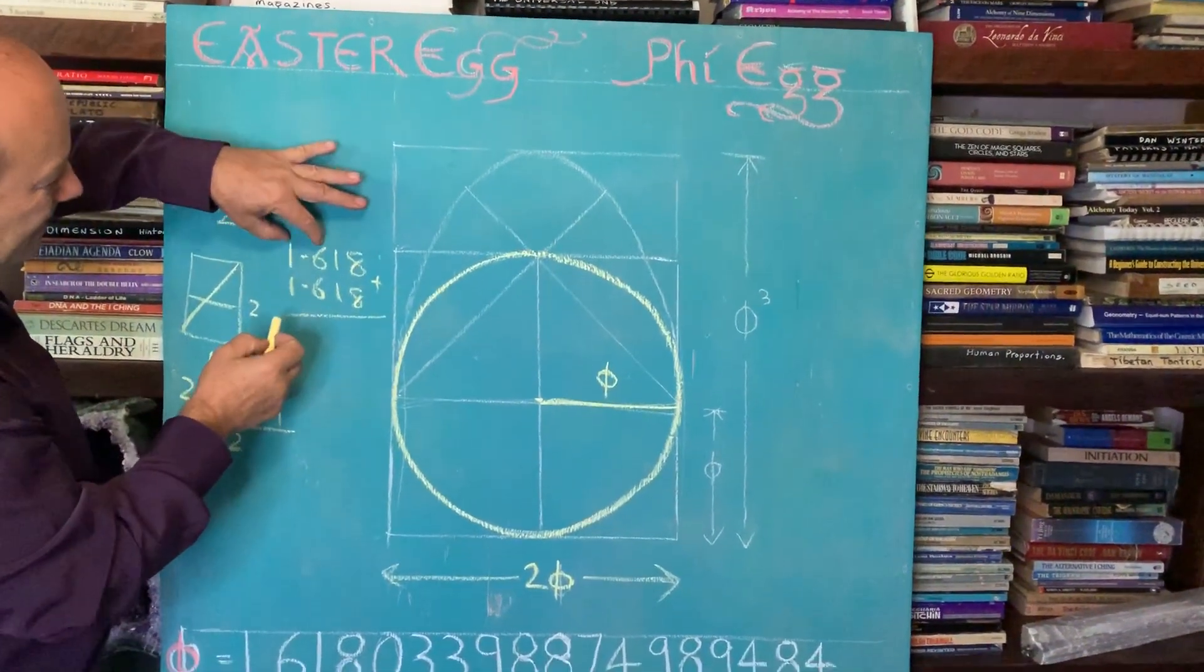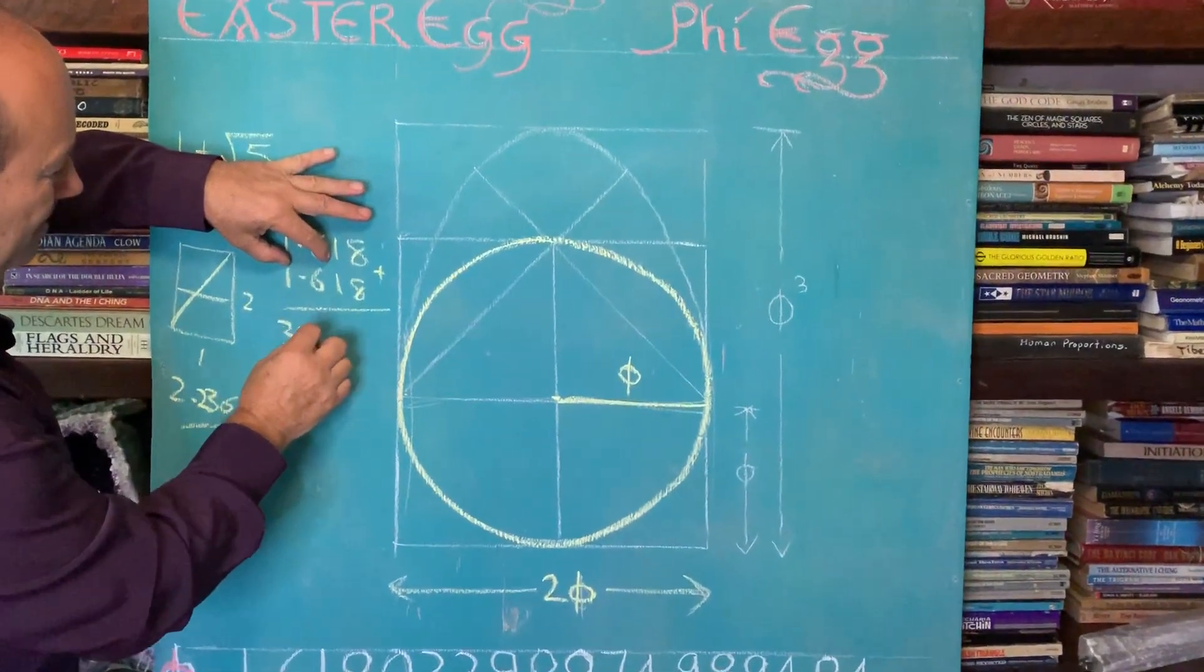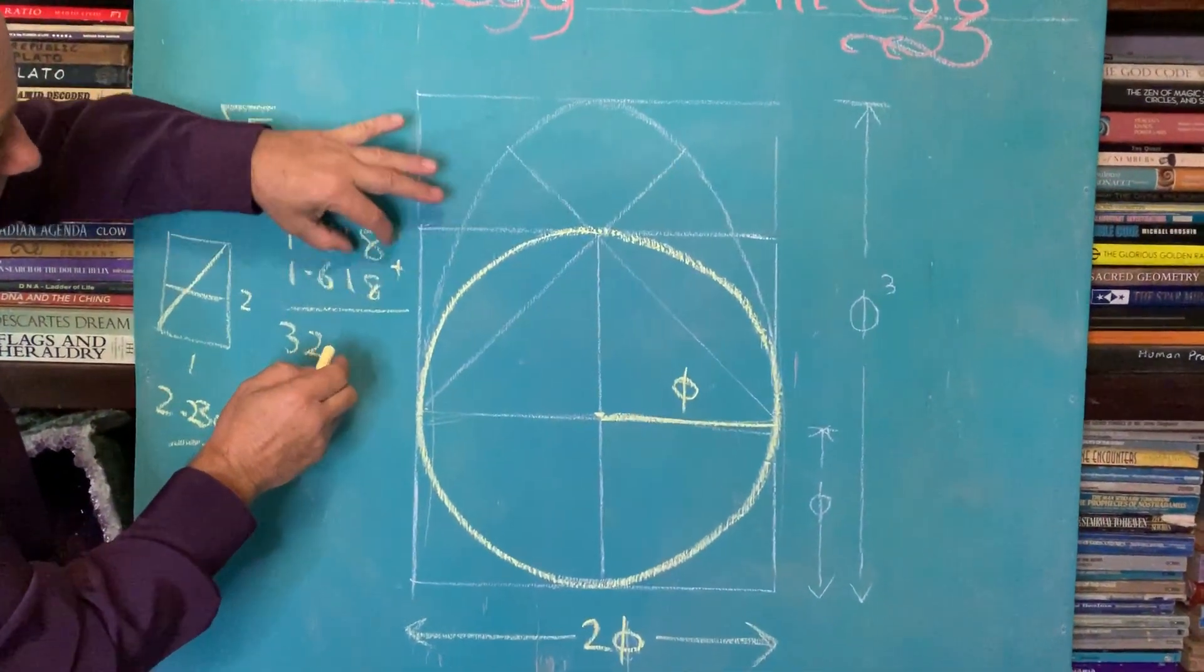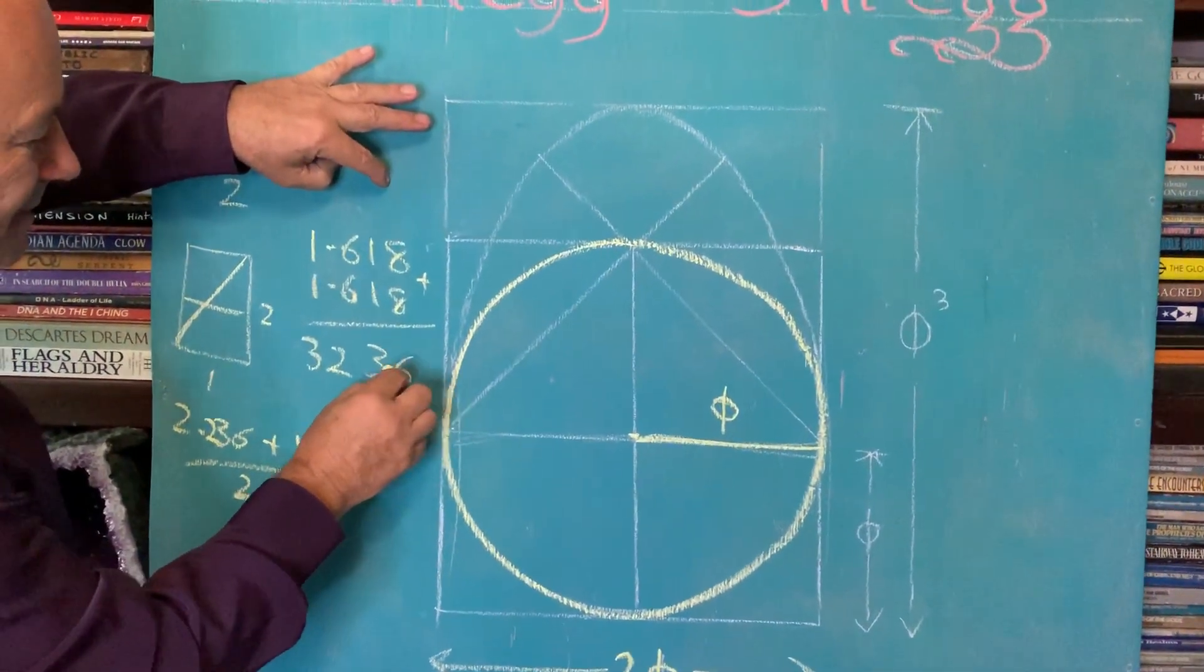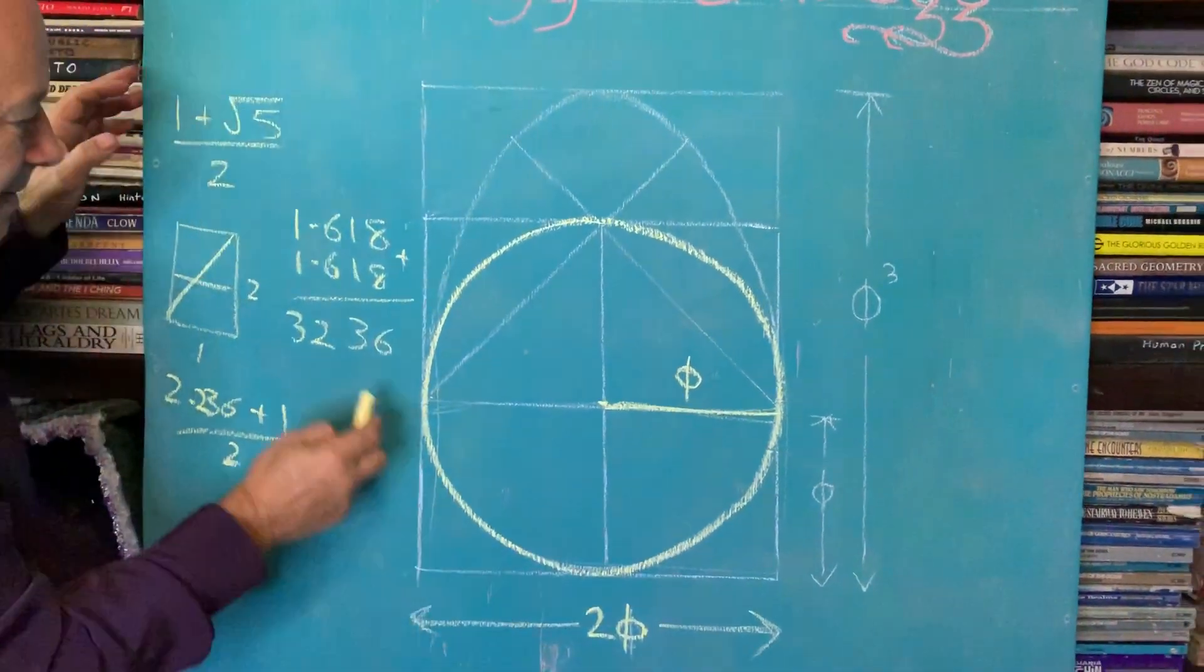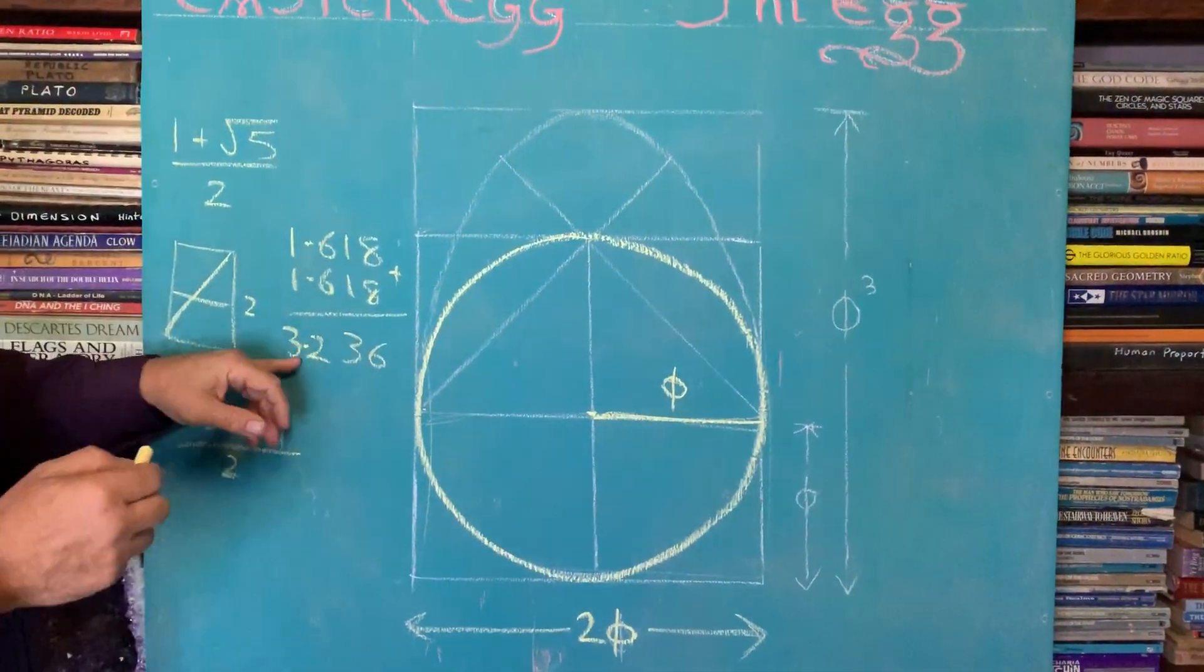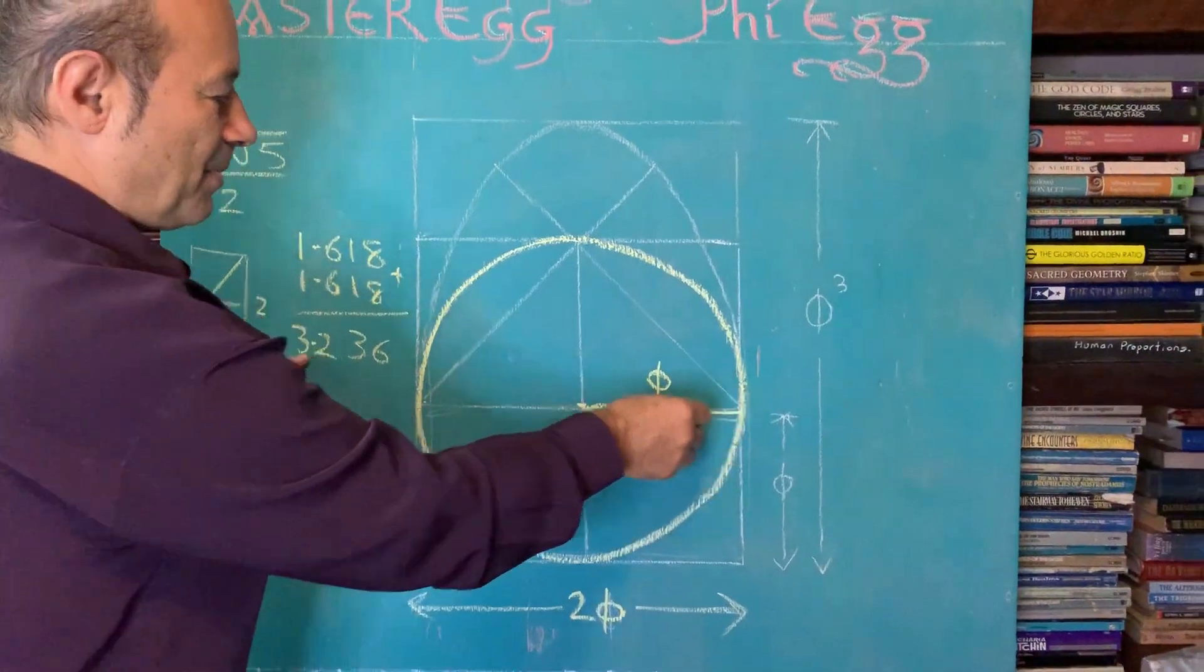It's almost like you're adding double 16 is 32 and double 18 is 36. So this distance going along here is called 3.236. So that's 1.618.